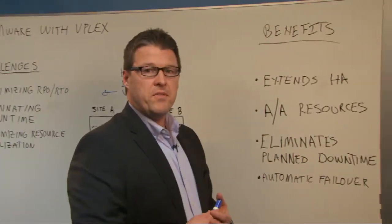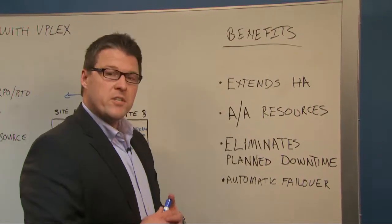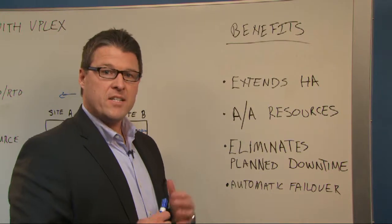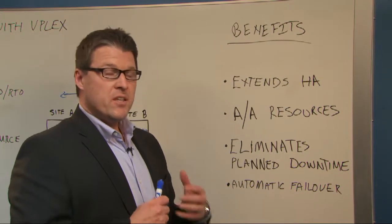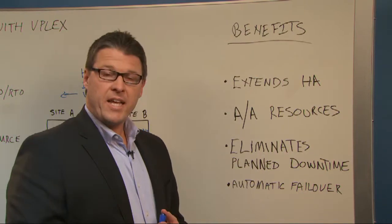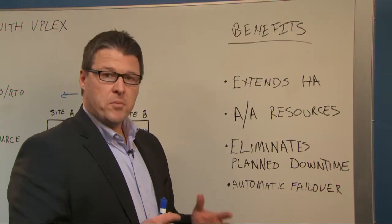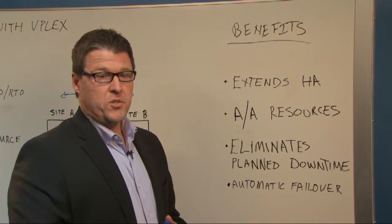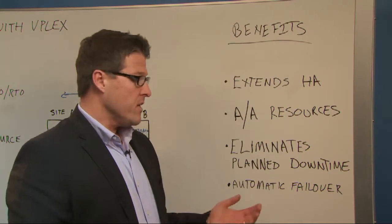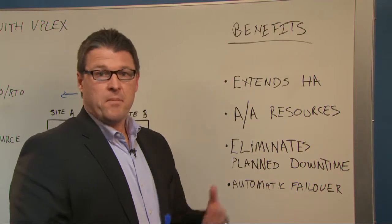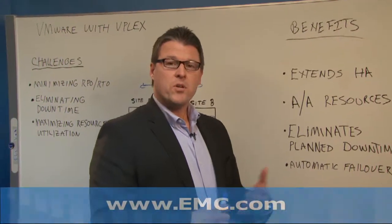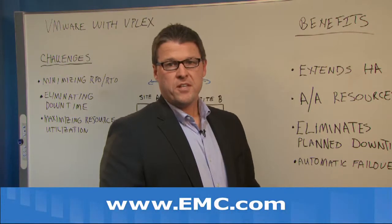Let's summarize the benefits for VMware with VPLEX. Number one, we're extending HA and using it across multiple sites. We're now active-active across data centers, allowing us to use CPU resources at both data centers effectively. We're eliminating planned and unplanned downtime because we are protected by having mirrored storage at two locations. Finally, we have automatic failover with HA — no human decision is involved. HA just restarts the VM at the second site. If you have any questions about this technology, please contact your EMC sales rep or go to EMC.com. Thank you for your time today.